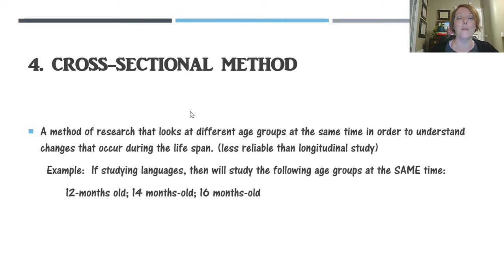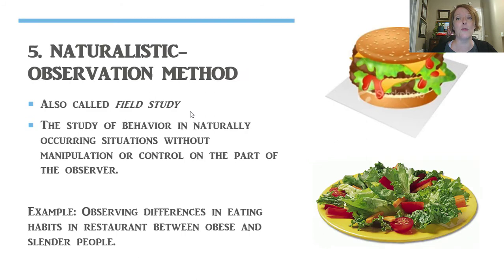For example, if you're studying language development, you're going to look at maybe 12-month-olds, 14-month-olds, and 16-month-olds all at the same time. Cross-sectional methods have definite benefits, but also drawbacks, because those age groups have arrived at the same point in time with different experiences. For instance, someone my age didn't grow up with a cell phone and you have, so the technology influence is going to be a huge factor in the cross-sectional method.